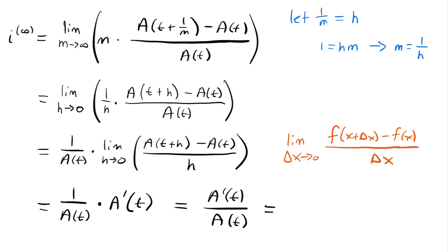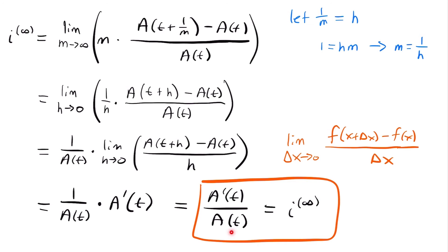This equals our nominal annual rate convertible infinitely — and this is the force of interest. Instead of saying 'compounded infinitely,' you'll hear the term compounded continuously, because it continues on forever. This is called the force of interest, and it is most commonly denoted δ(t). Now that we know what the force of interest is in terms of the accumulation function, let's look at how it works for simple interest and compound interest, since we know the accumulation functions for both.